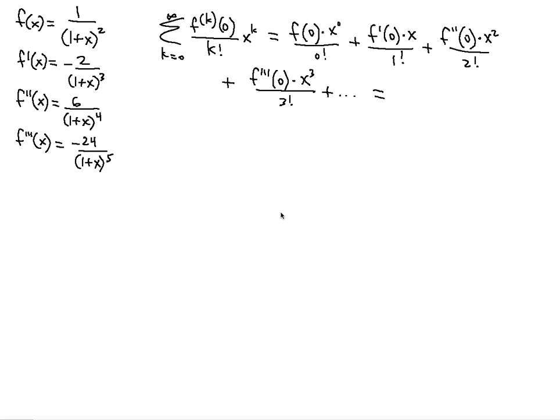We want to find the Taylor series about x equals 0, which is the Maclaurin series, that will converge to this function for certain values of x. After finding the Maclaurin series, we will find the interval of convergence.